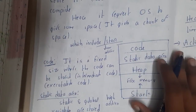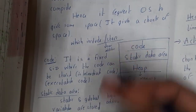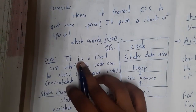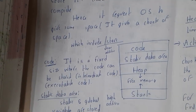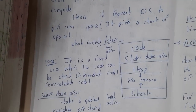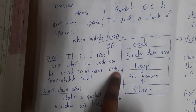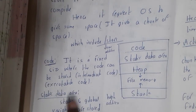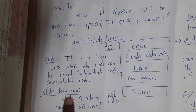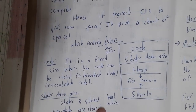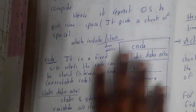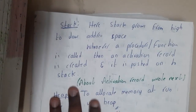The code segment is a fixed size where the code can be stored; it could be an intermediate code or an executable code. In the static data area, static variables such as global variables, local variables, and static variables are defined.